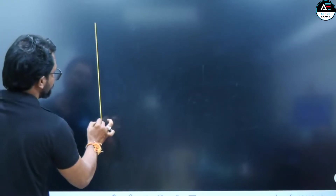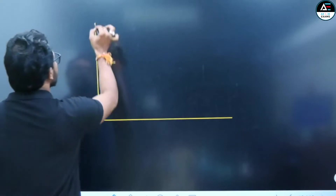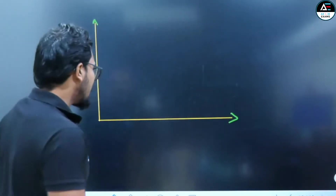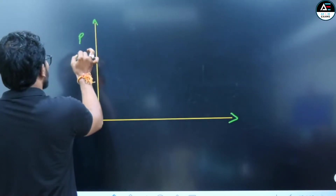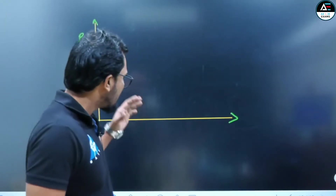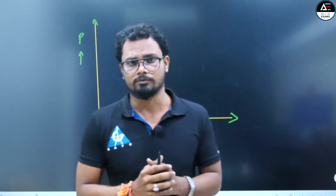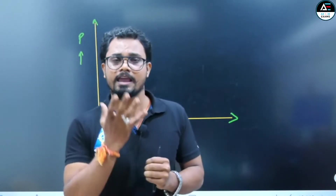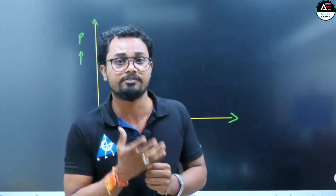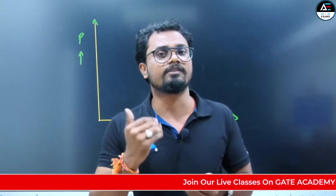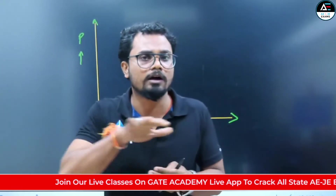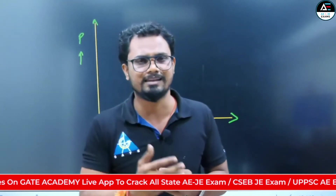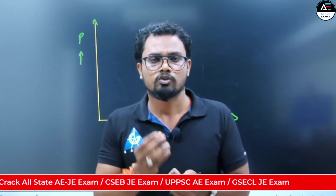Here I take a vertical axis and a horizontal axis. Along the vertical axis, we measure pressure. To measure anything, you need a reference point — and that reference point is the important point according to which we will measure pressure.